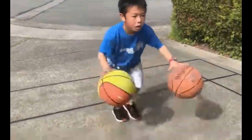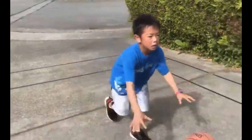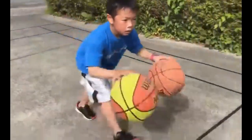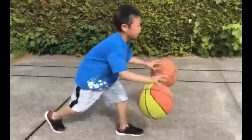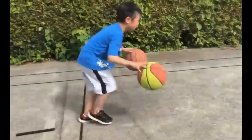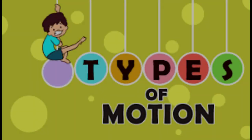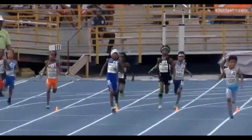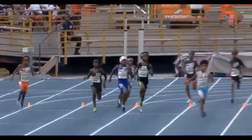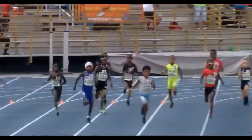But did you know there are different types of motion? Let's check them out. First, we have rectilinear motion. This is when something moves in a straight line, like this car driving on a straight road.